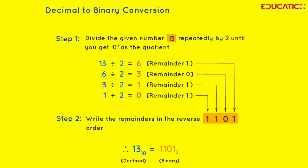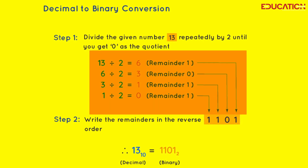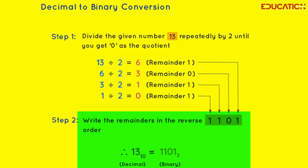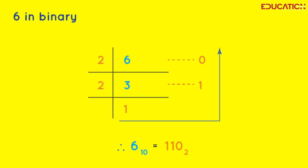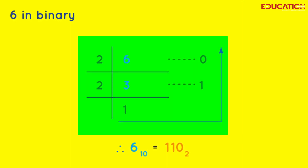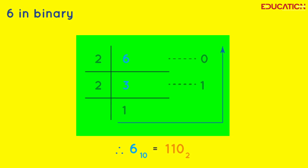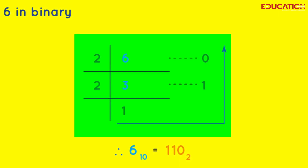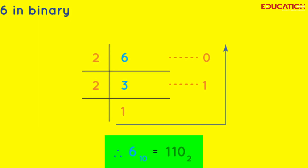To convert decimal to binary, divide the decimal number by 2 and keep track of the remainder. Repeat until the decimal number is 0. The binary number is the sequence of remainders, starting from the bottom up. For example, to convert the decimal number 6 to binary: divide 6 by 2 and get a quotient of 3 and a remainder of 0. Divide 3 by 2 and get a quotient of 1 and a remainder of 1. Divide 1 by 2 and get a quotient of 0 and a remainder of 1. So the binary equivalent of decimal 6 is 110.